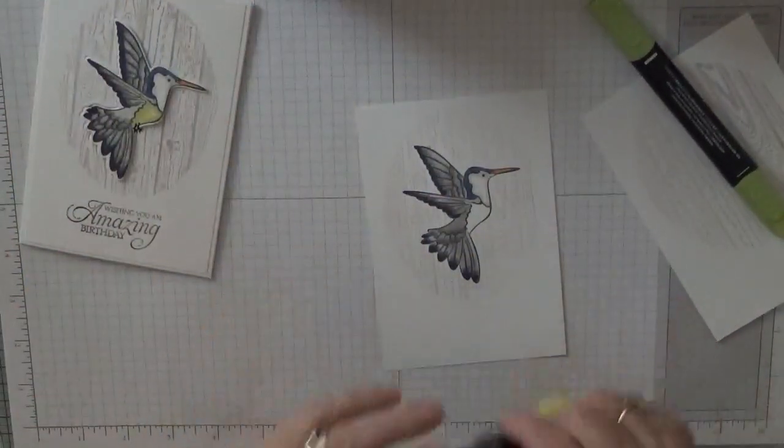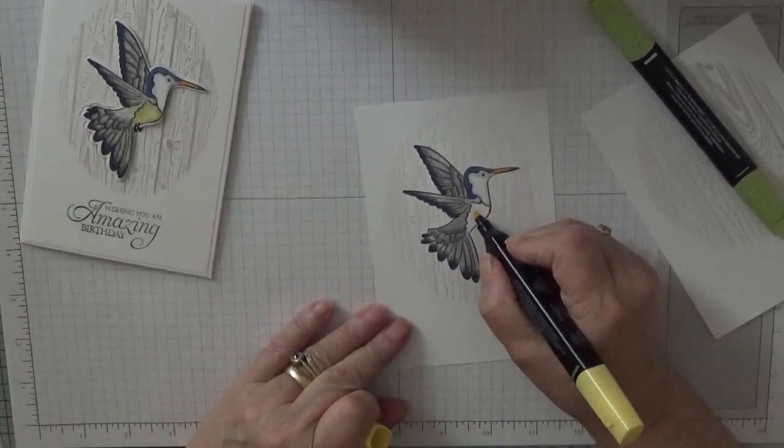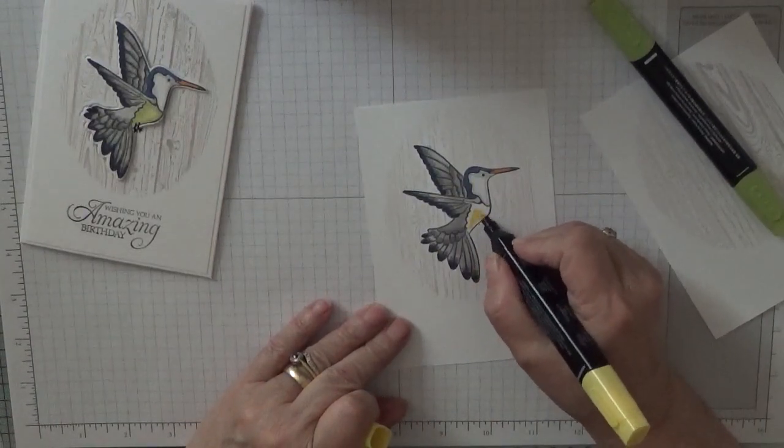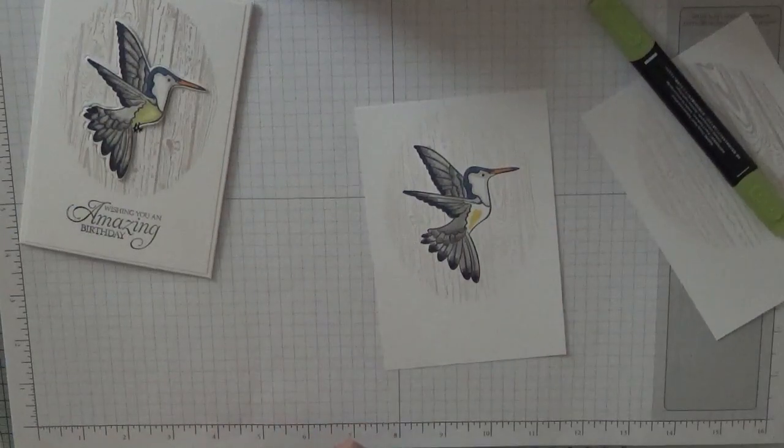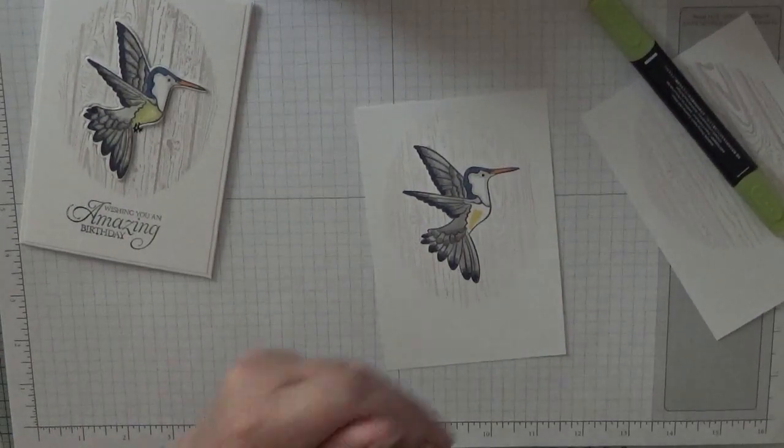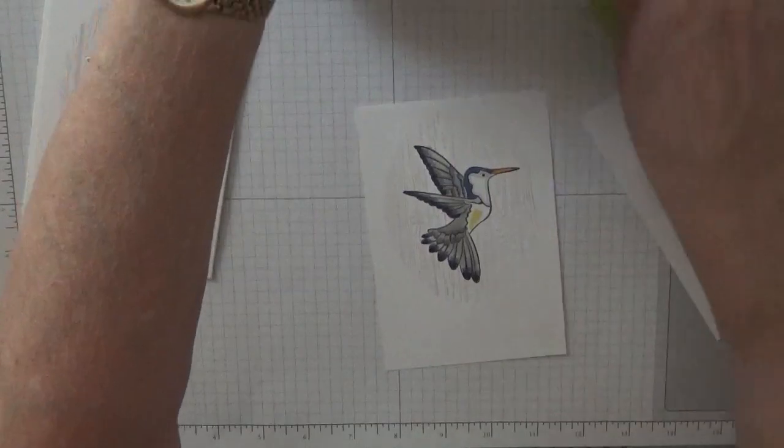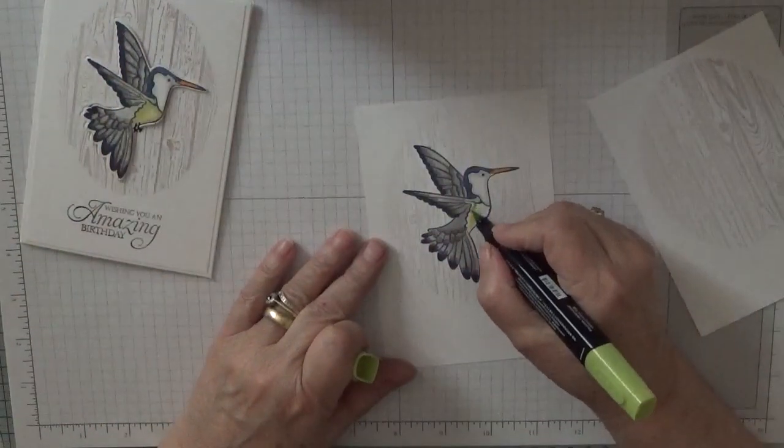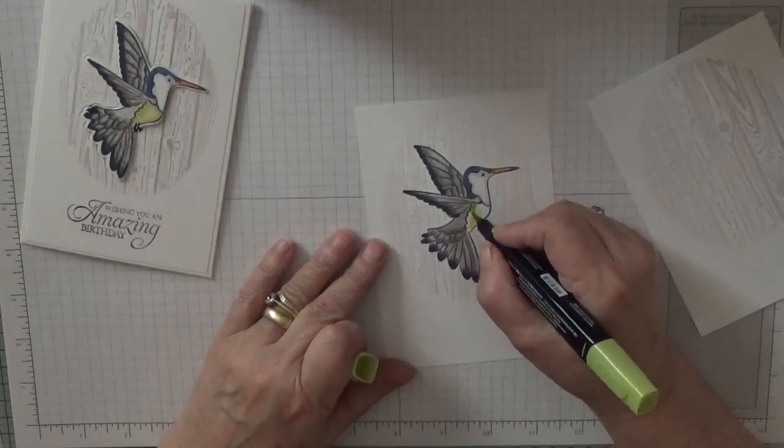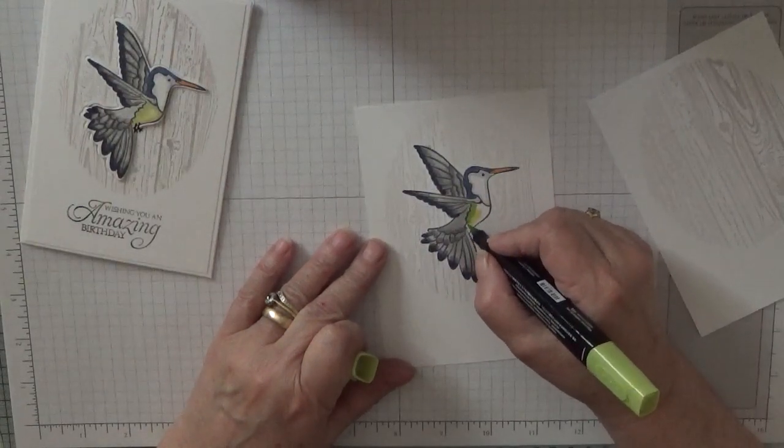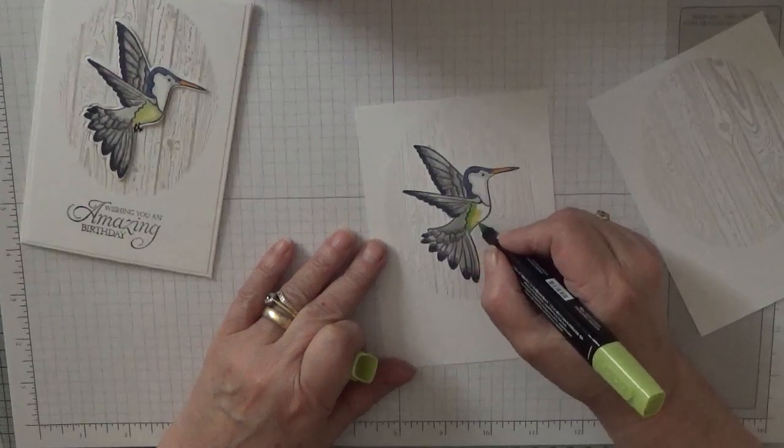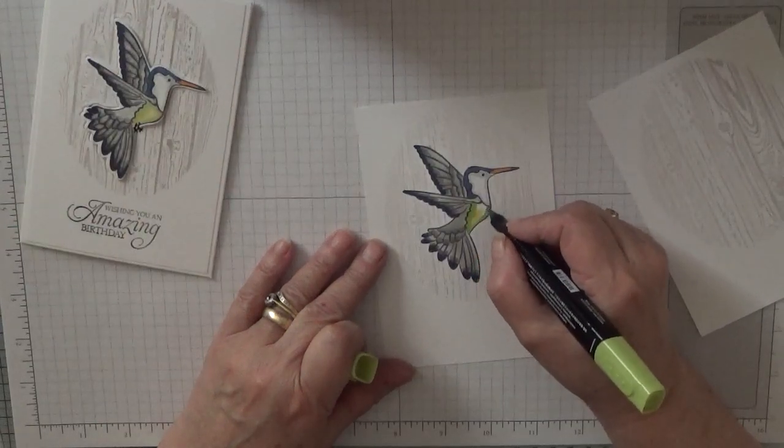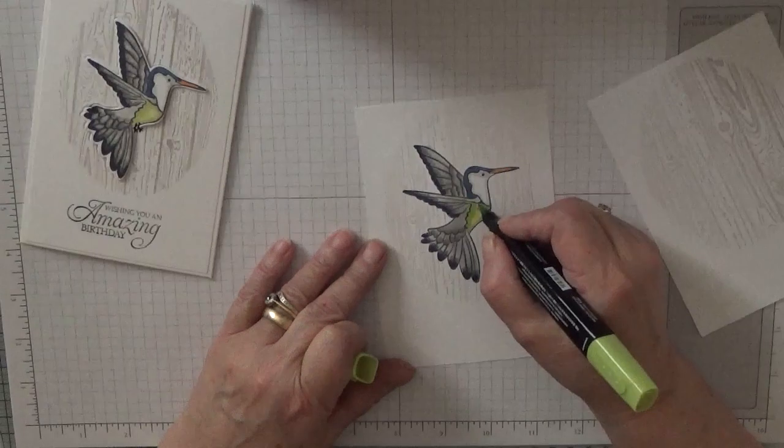Right, for his belly, I just did a squiggle of yellow in the middle. Daffodil delight that was. And then the rest of it I filled in with granny apple green.